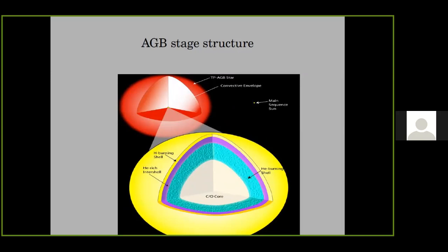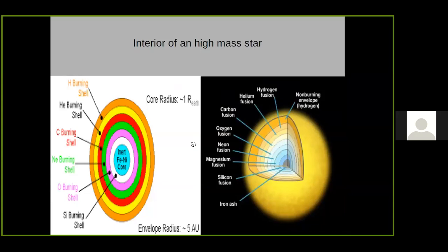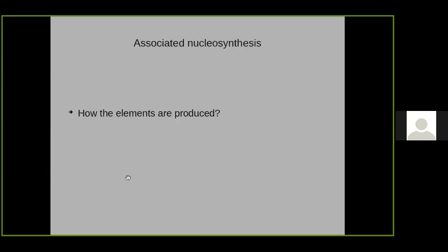When helium exhausts, the star develops two shell structures — a hydrogen burning shell and a helium burning shell. This stage is called the Asymptotic Giant Branch (AGB) stage. Most low mass stars end their life at the AGB stage and become white dwarfs. But for high mass stars, the process continues: carbon, then oxygen, neon burning creates many burning shells — an onion structure — before the star finally explodes as a supernova and ends as a neutron star or black hole.